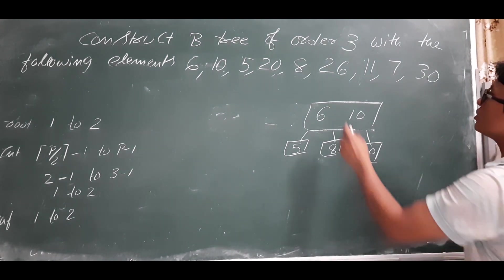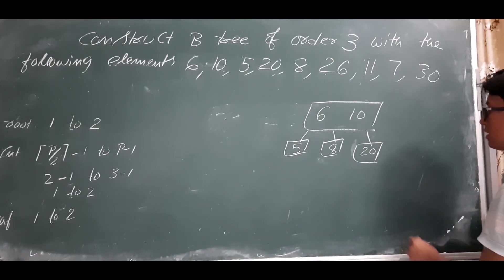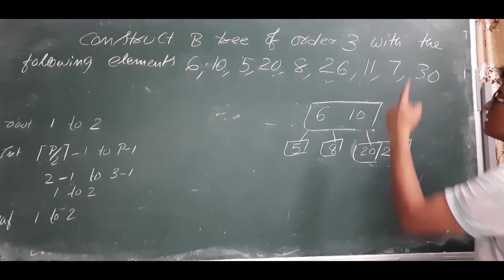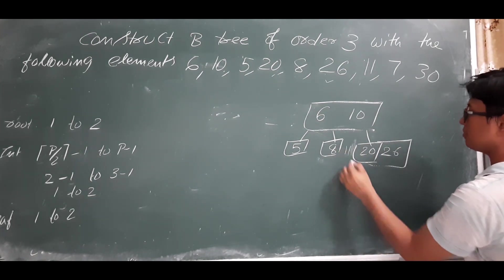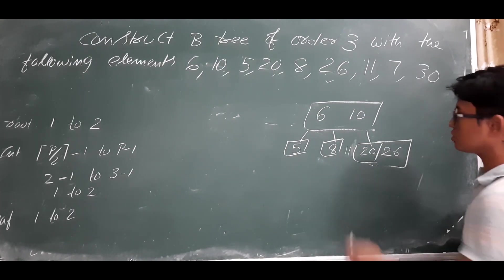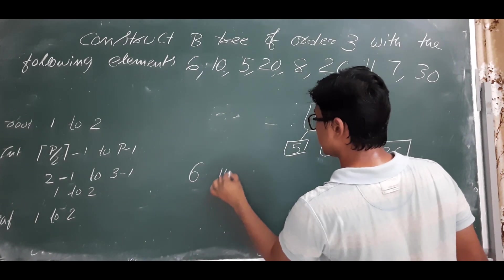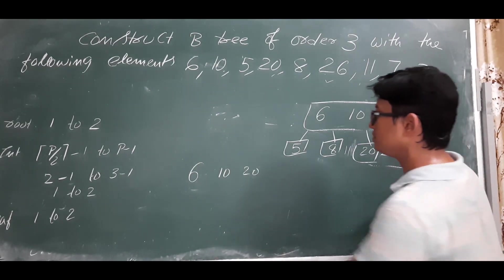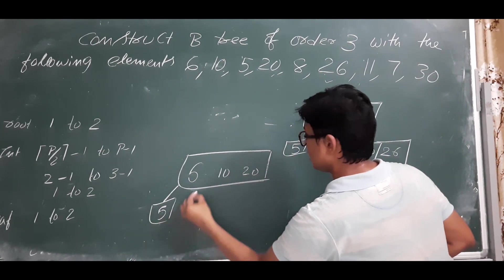Now I want to insert 26. 26 is greater than 10 and greater than 20, so I insert 26 in the rightmost leaf — no overflow, no problem. Now I want to insert 11. 11 is greater than 10 and less than 20, so 11 goes into that middle leaf. I cannot insert 11 there, so I take the median and promote it to the parent node. This would make the root 6, 10, 20.